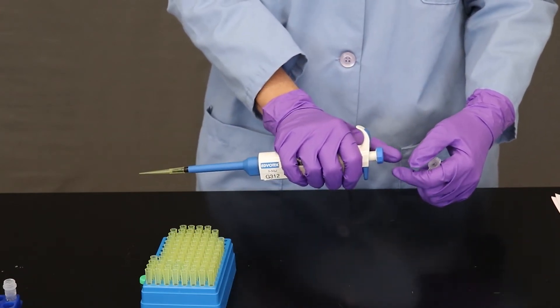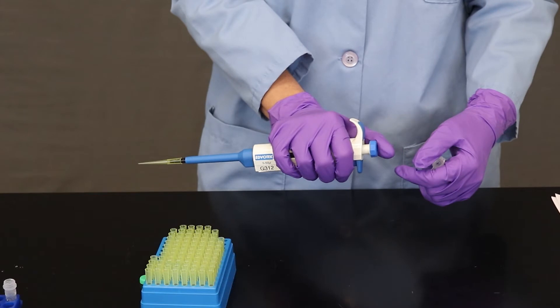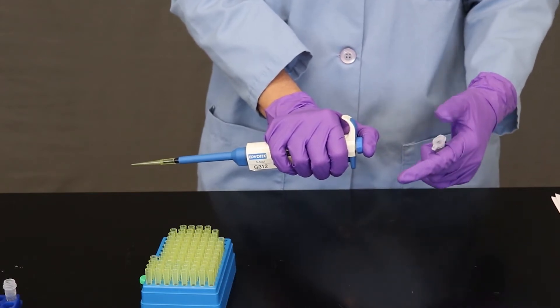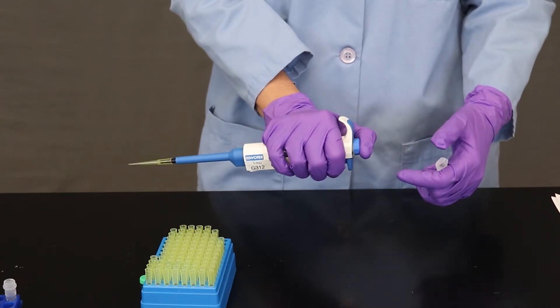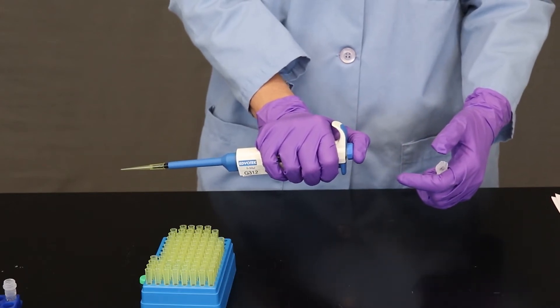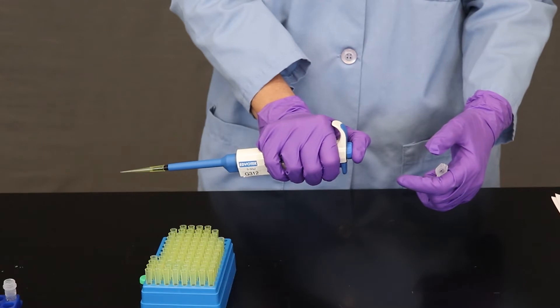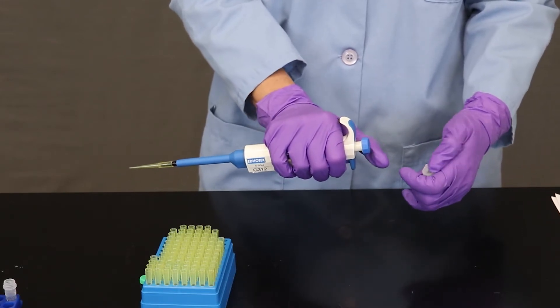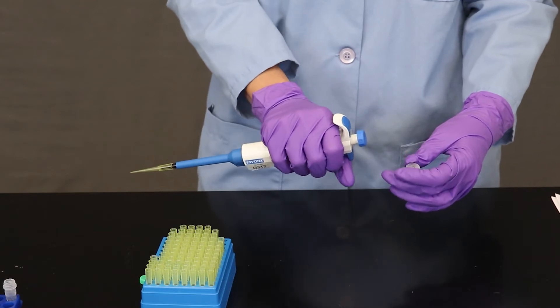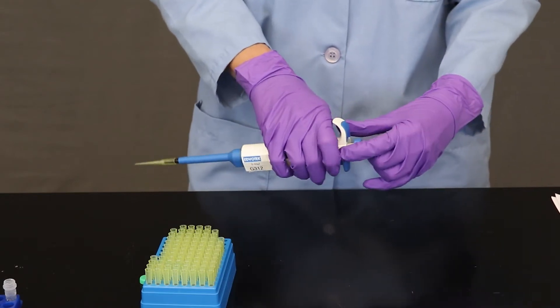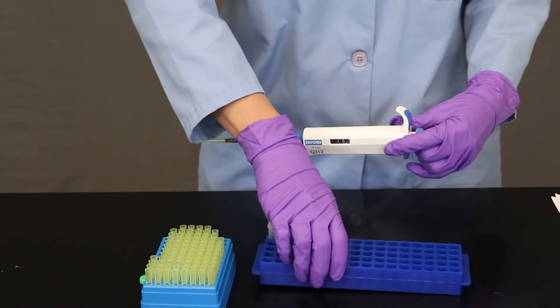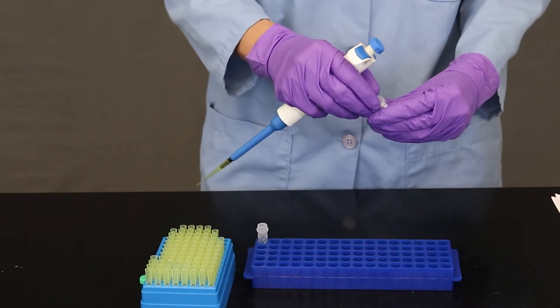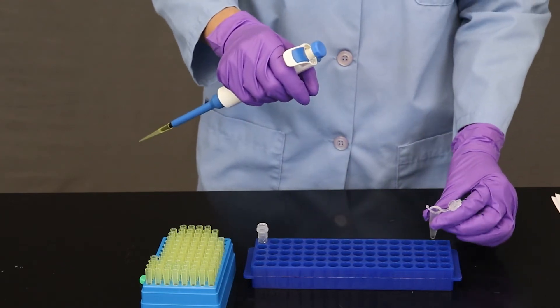Now the micropipetter, when you use it, it has two stops on this plunger, which is going to draw the solution up. So I've pushed down to the first stop, and then there's a second stop that I can push to. And when I actually pipette my solution, you'll see how these come into play.